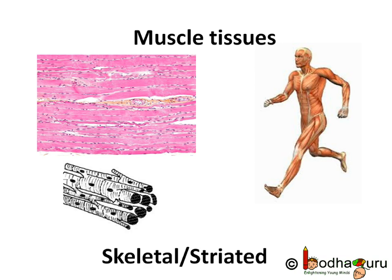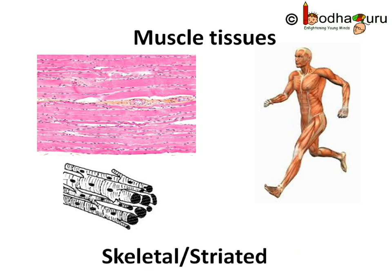The muscles present in our limbs — that is, the muscles in our legs and hands — are the ones which we can control. They can move according to our wish. These are voluntary muscles, and these muscles are mostly attached to the bones and help in movement. Hence, they are called skeletal muscles.